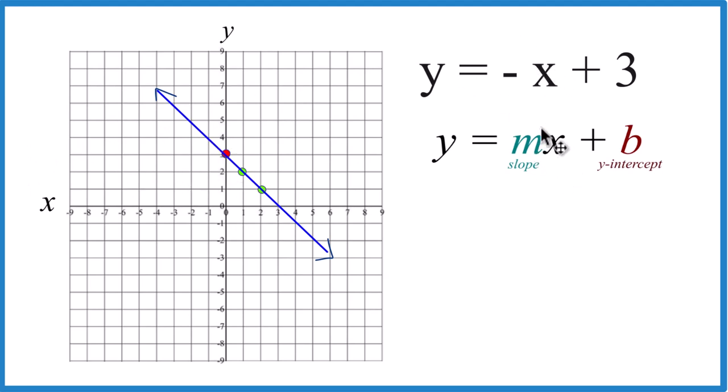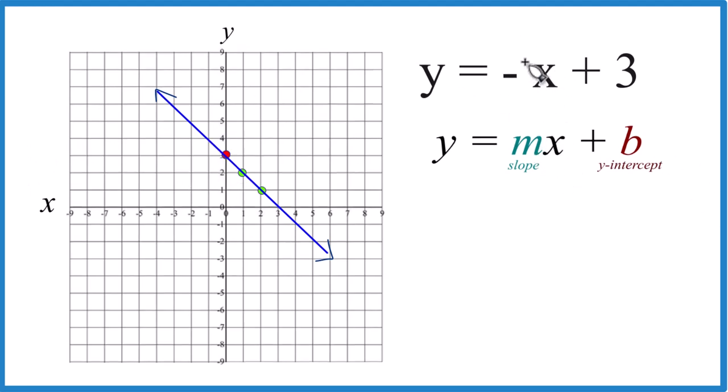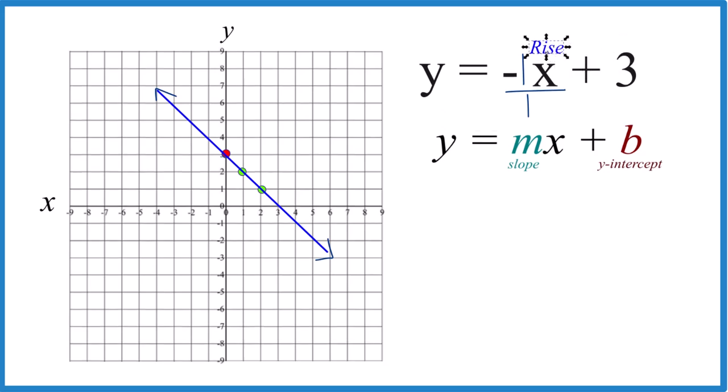For the slope, let's call this minus 1x. Same thing. And we can call it minus 1x over 1. It's still just minus x. But now we can say negative 1 is the rise, 1 is the run. So typically, rise over run, you would rise from the y-intercept 1 and then run 1.